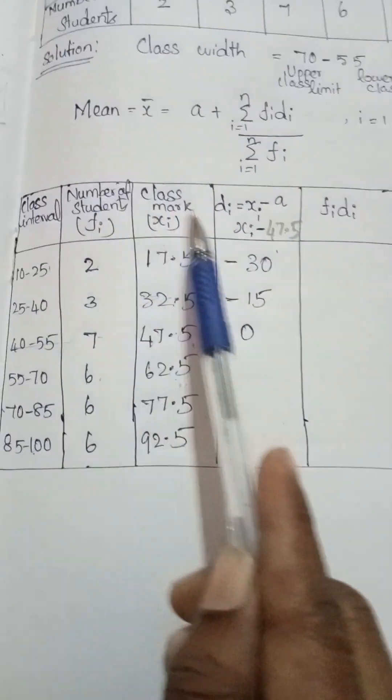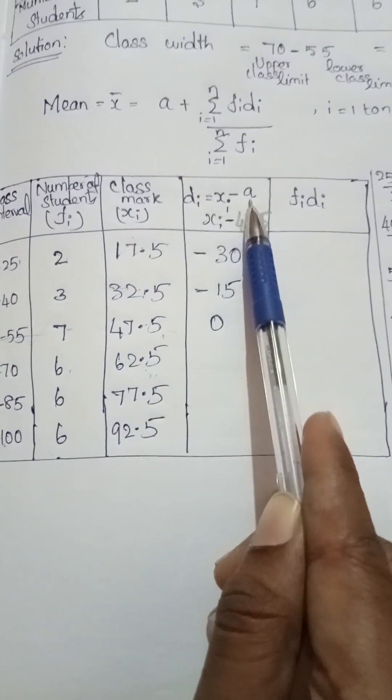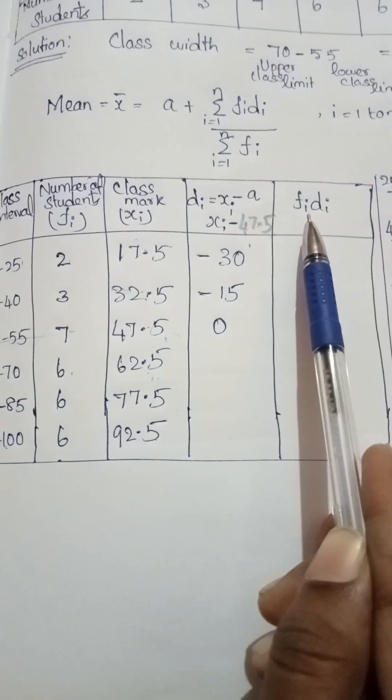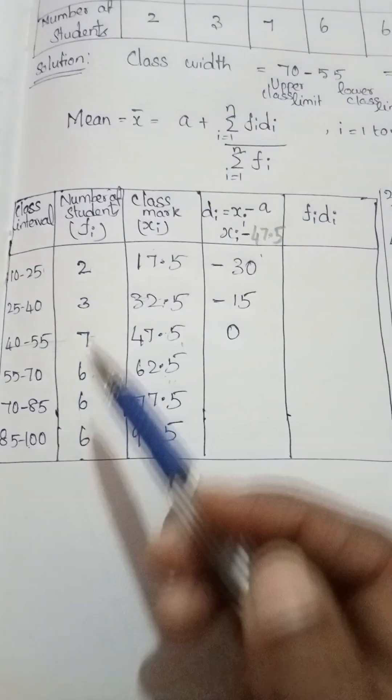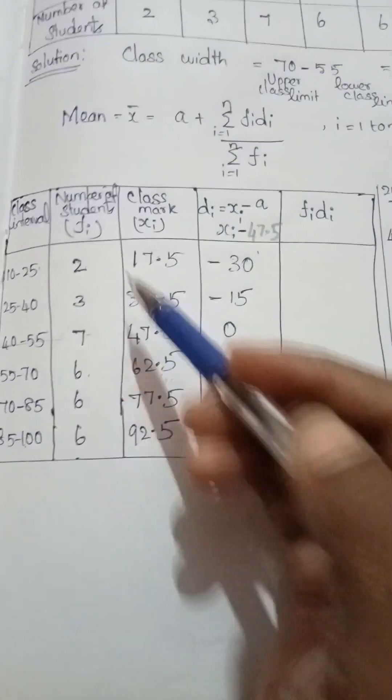Next you draw the table. Class interval, number of students, next class mark, di equals xi minus a (this is assumed mean), next one fi into di. You write all the class intervals and the number of students, the values.